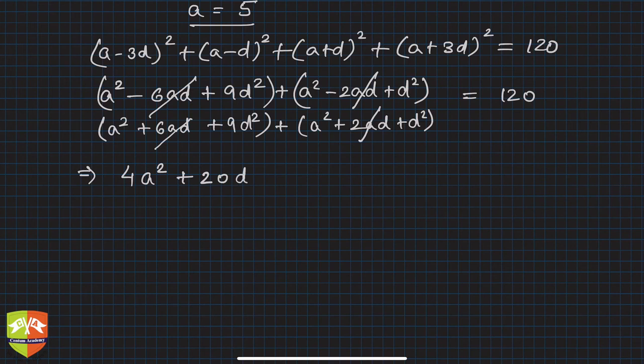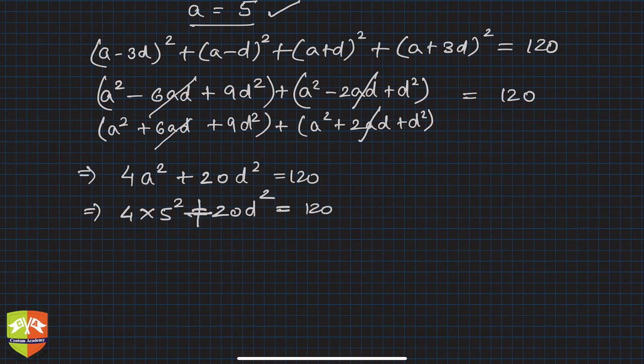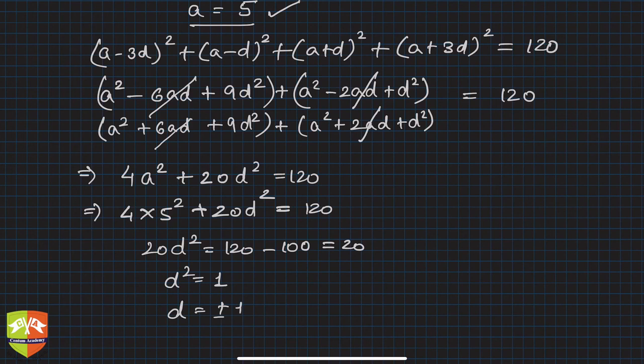Thankfully we have the value of a here, 5, so we can write this as 4 times 5 squared plus 20d squared is 120. Hence 20d squared is 120 minus 4 times 5 squared which is 100, so this is 20. What do I get? d squared is 1. That means d is plus or minus 1.